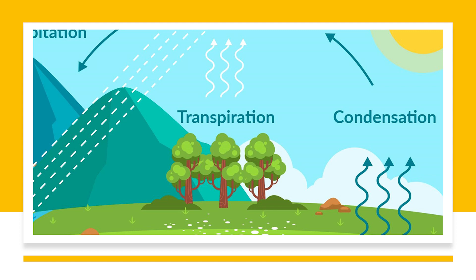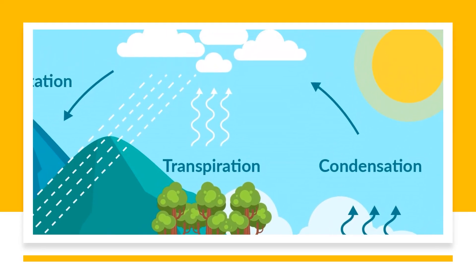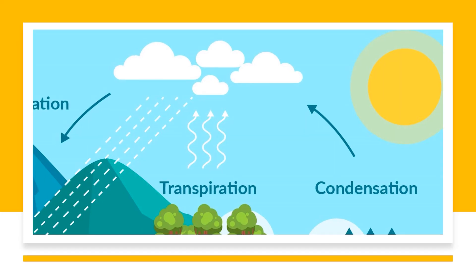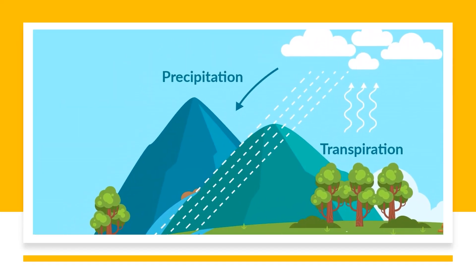Once water vapor is in the atmosphere, it can undergo a process known as condensation. This occurs when water vapor cools and turns back into liquid form, forming clouds in the process. Eventually, these clouds become heavy enough to release their moisture back to the surface of the earth as precipitation. Precipitation can take many forms including rain, snow, sleet, and hail, and it can have a major impact on our environment.